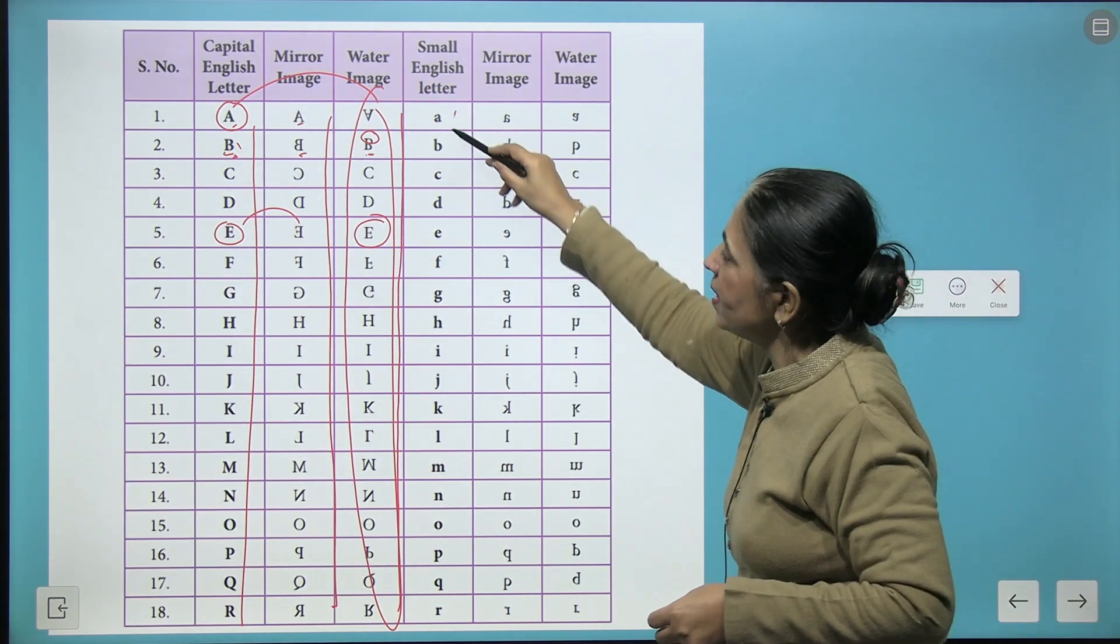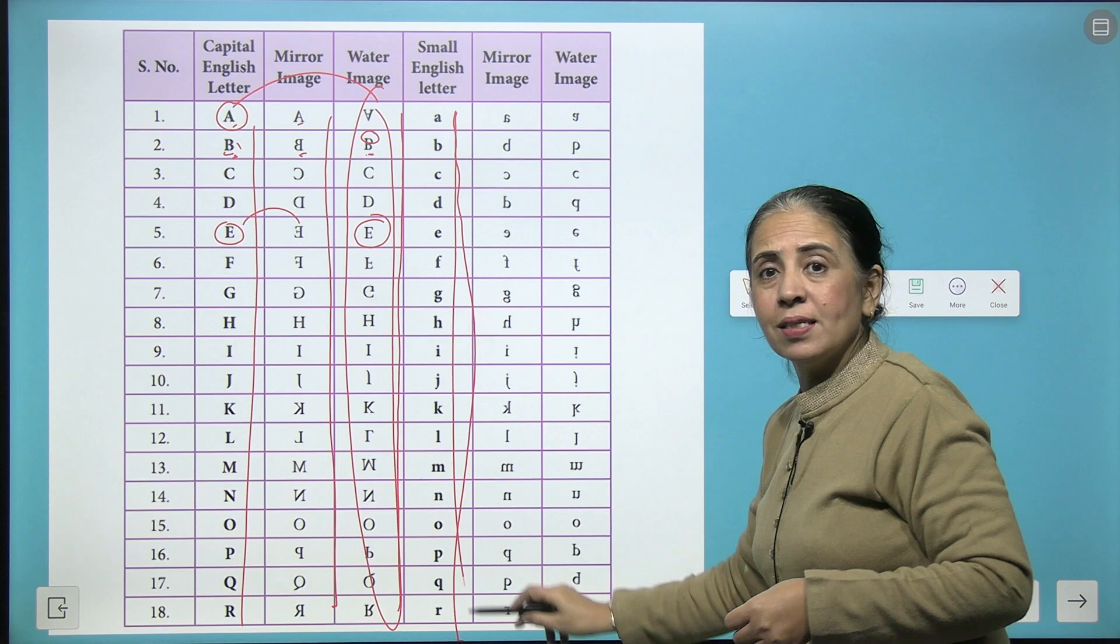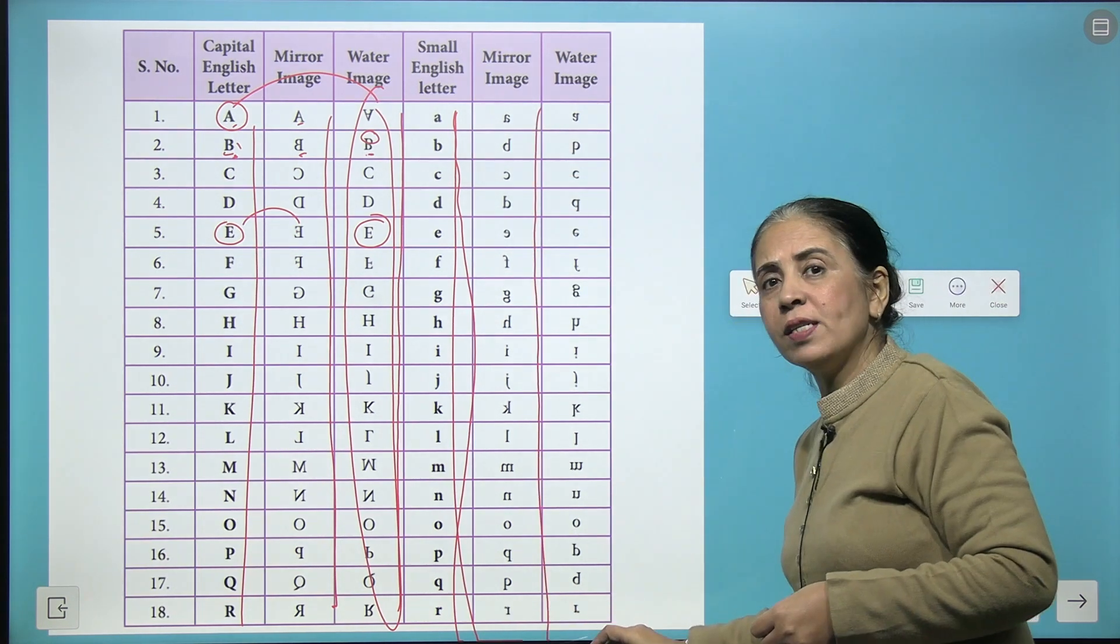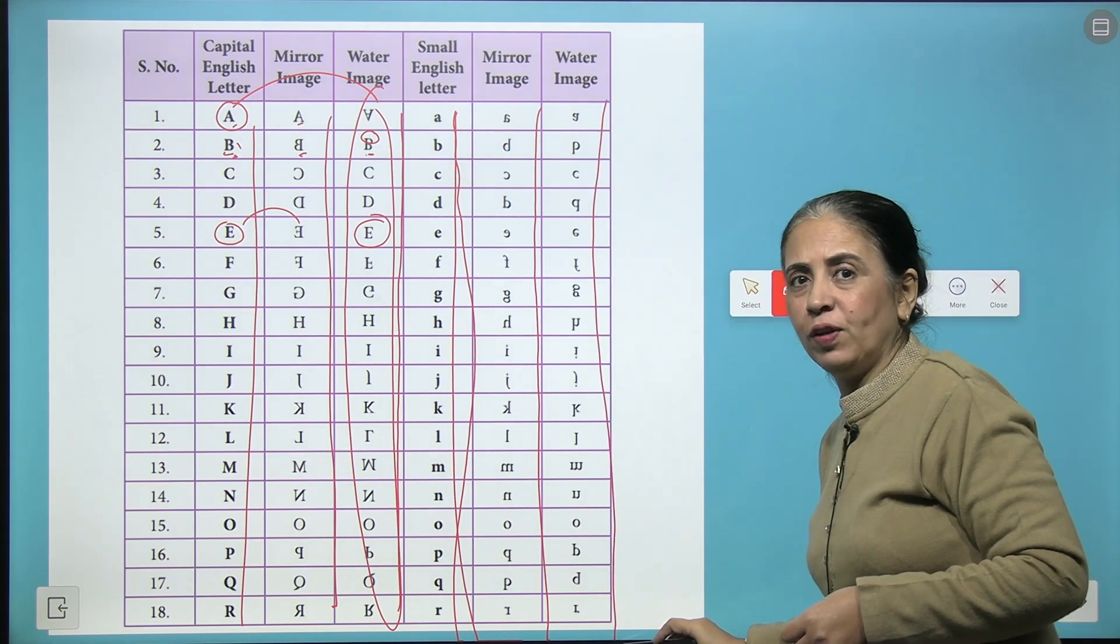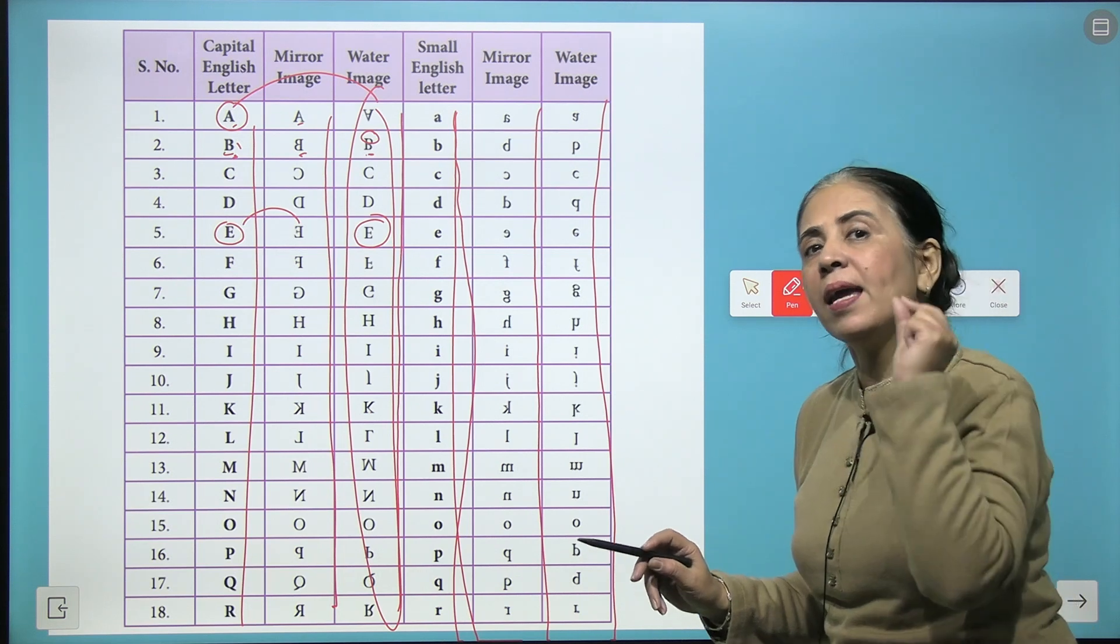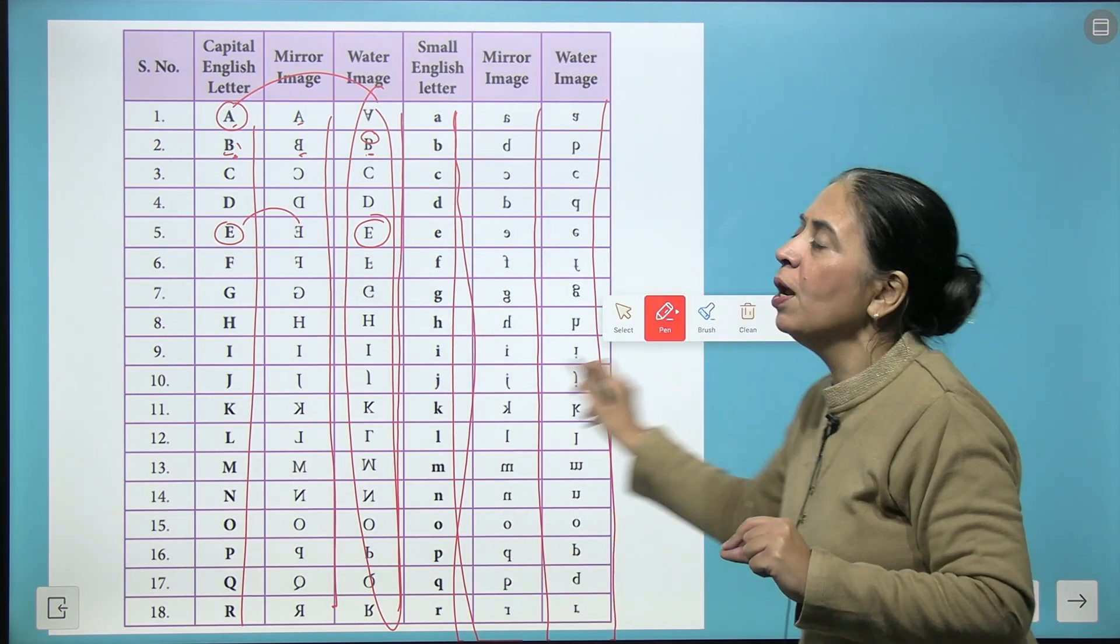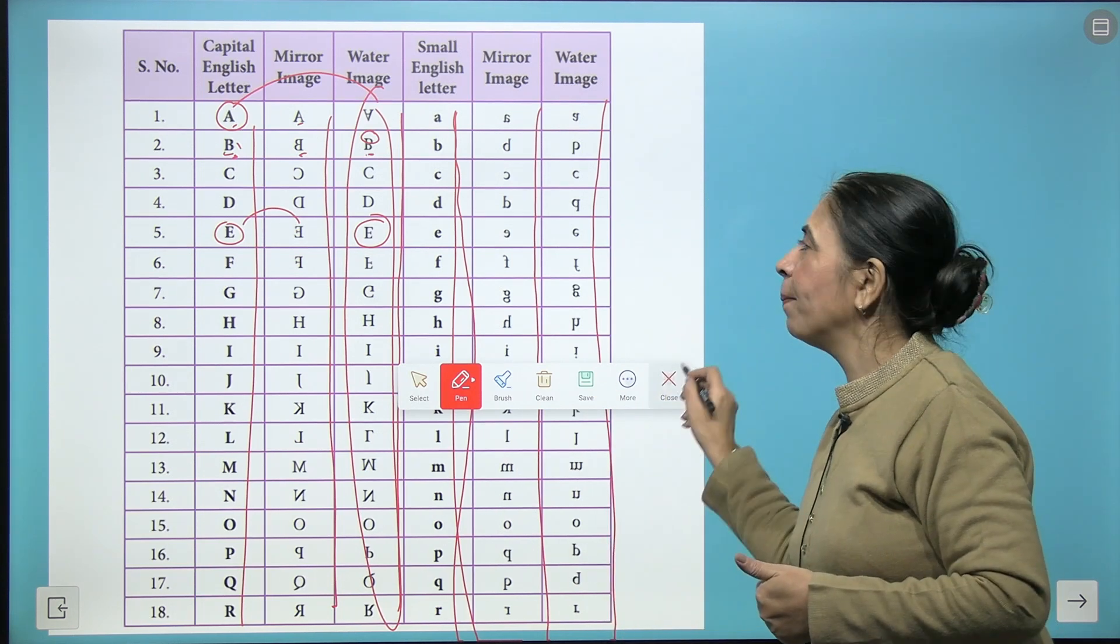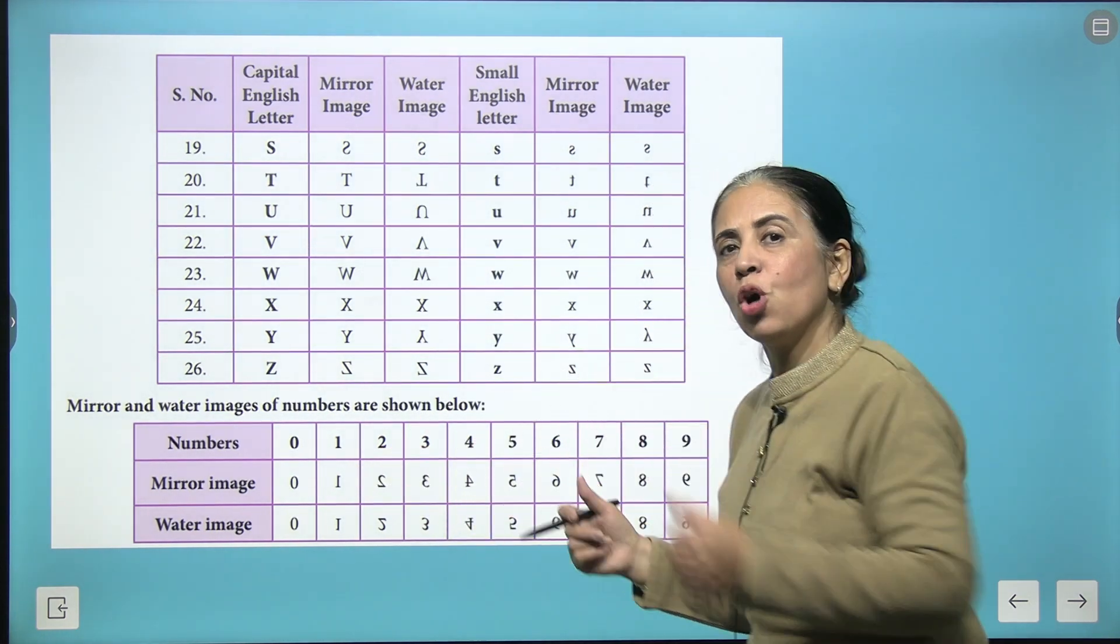And just keep observing very carefully how the mirror images are formed for these alphabets and how the water images are formed. Further, I have the lowercase alphabets also for you. So these are lowercase alphabets, these are the mirror images of these alphabets, and here we have the water images of these alphabets. So a careful understanding and increase in your observation path will definitely help you to excel and become more and more smart in doing the questions based on mirror image and water image.